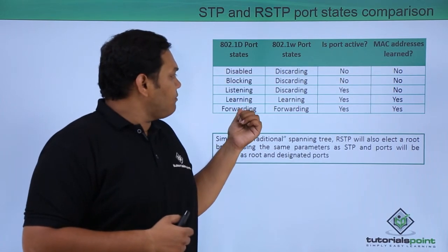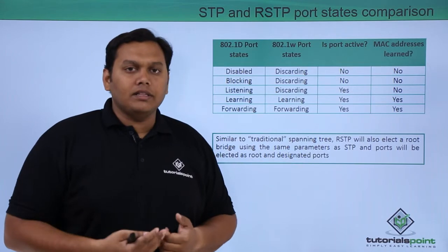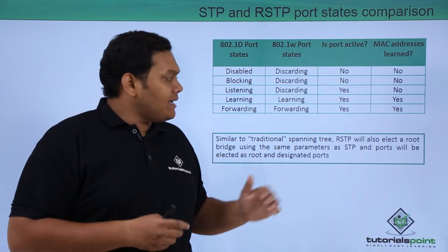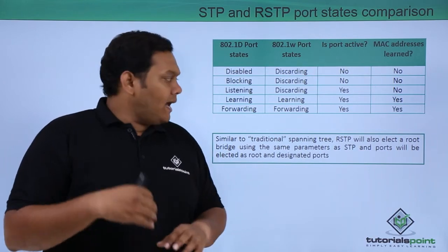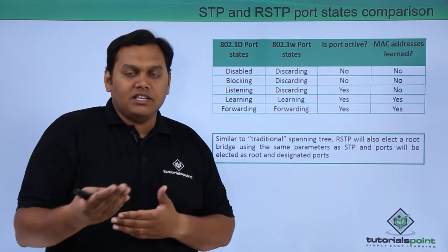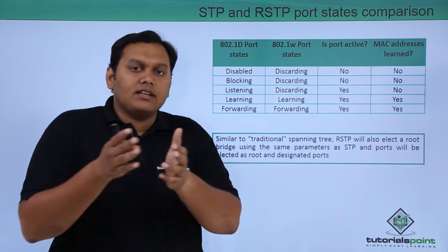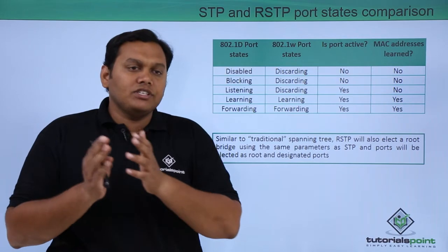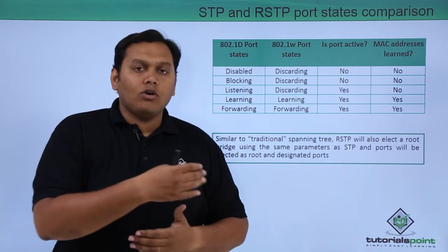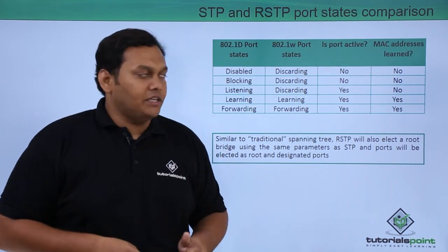For the learning and forwarding states, the port is active and MAC addresses are learned. Similar to traditional spanning tree, RSTP also elects the root bridge using the same parameters as STP. Ports are elected as root ports and designated ports accordingly, based on the parameters used to select the root bridge.